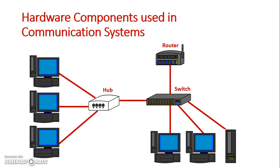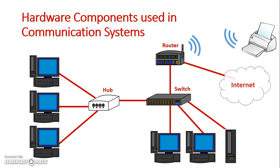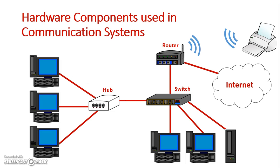If you want all these devices to access other resources — perhaps wirelessly — you need to use a router. The router will give wireless access to devices, and of course it will also provide internet access for all the other devices connected to the switch and hub as well. It's important to understand the independence of the hub, switch, and router and what each provides.